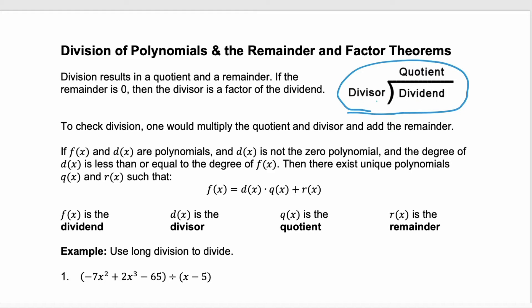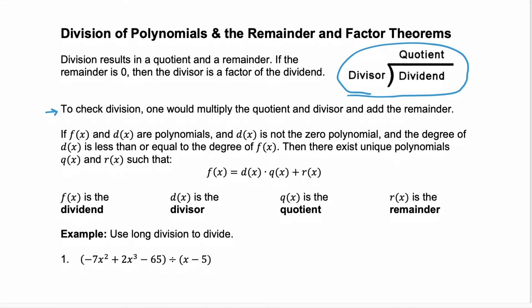Or here, the divisor is actually a factor of our polynomial. You can still check your division of a polynomial the same way you would check division of everyday numbers: multiply that quotient and divisor, and then add the remainder.